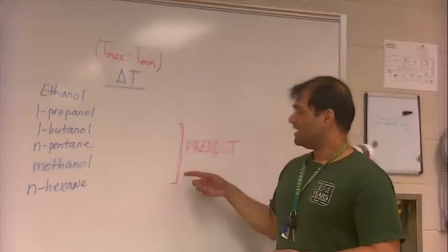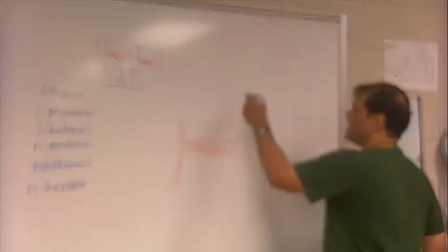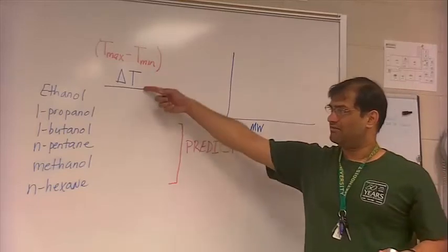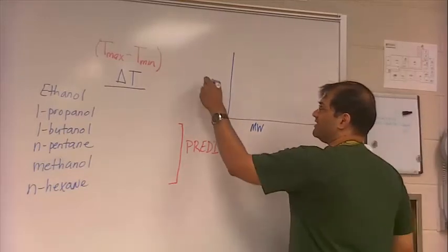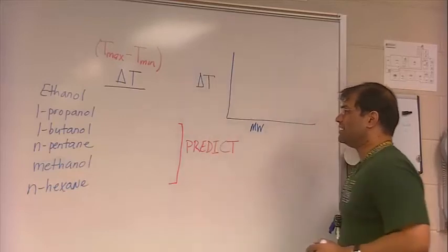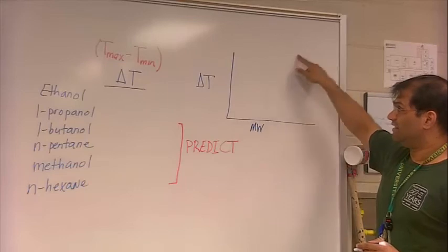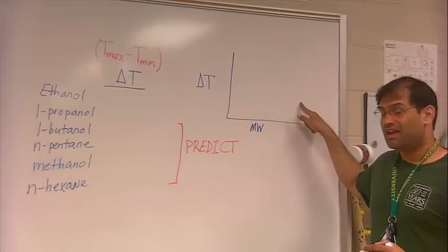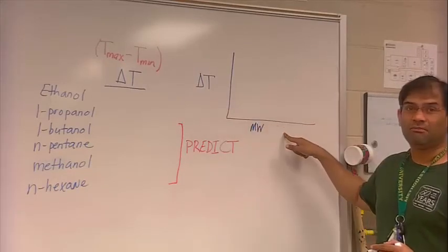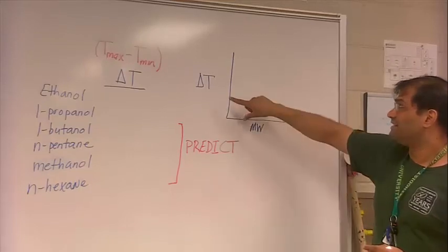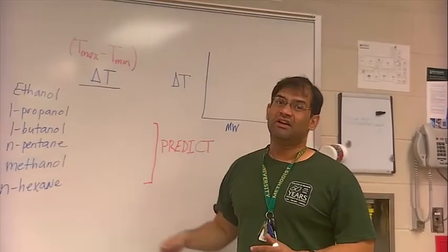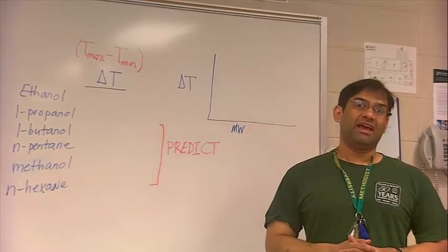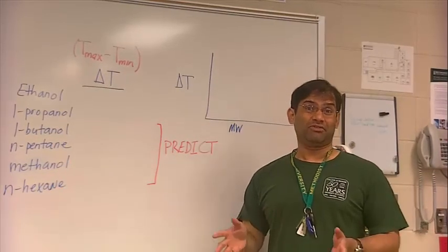The final thing you want to do is a trend. So the trend that you want to determine in your lab report is the molecular weight, or the molar mass, of each of these six solvents, and the delta T. What is the trend? As the molecular weight increases, does the delta T increase, or does the delta T decrease? And you want to relate this trend of your temperature difference versus the molar mass, the molecular weight of these solvents. Relate that trend to the strength of the intermolecular forces that each of these molecules have. So that's going to be your lab for Chemistry 1520, the first lab.